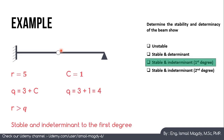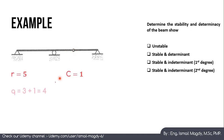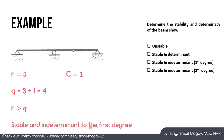Let's check another example. We have two hinge supports, one roller, and one intermediate hinge. The two hinges give 2 reactions each, and the roller gives 1, so R equals 2 plus 1 plus 2 equals 5. C equals 1 because there is one intermediate hinge, so Q equals 3 plus 1 equals 4. Since R is greater than Q by 1, the beam is stable and indeterminate to the first degree.